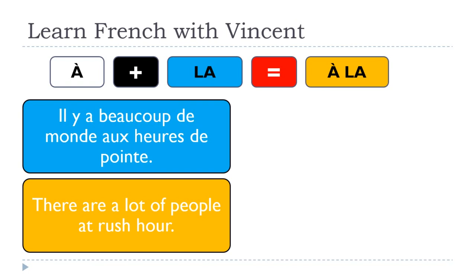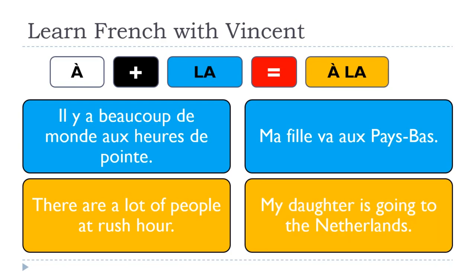'Il y a beaucoup de monde aux heures de pointe' — There are a lot of people at rush hour. Here too I make the liaison: 'aux heures de pointe.' 'Ma fille va aux Pays-Bas' — My daughter is going to the Netherlands. I used 'aux' here because the Netherlands is one of the few plural country names, like the United States. So in that case we say À LES, which becomes AUX.